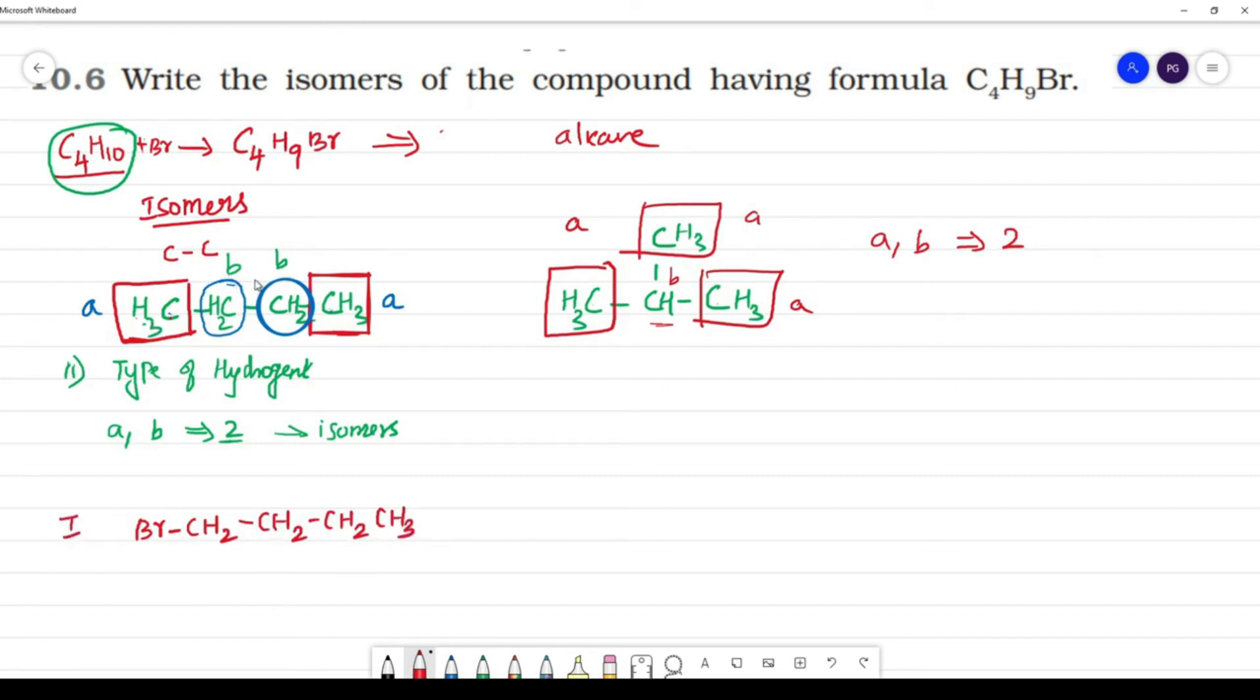Next, B type of hydrogen replace. CH3 C BR H, CH2 CH3. So this is one isomer. Two. Next, this is two isomers.